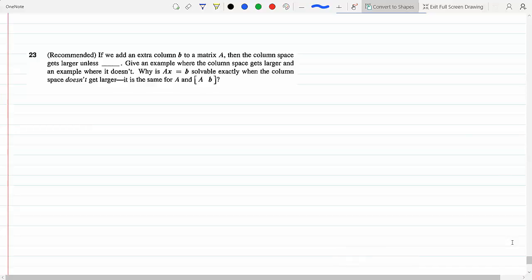If we add an extra column B to a matrix A, then the column space gets larger unless B is a combination of the previous columns of A. In other words, unless B is in the column space of A, because then no new information has been added.